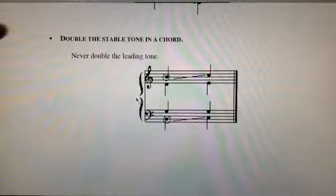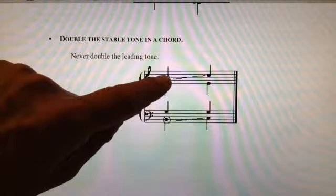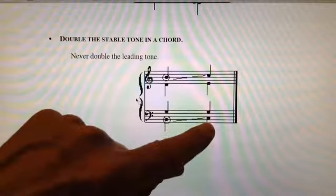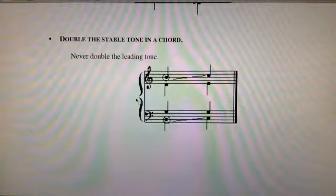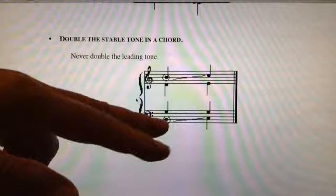Double the stable tone in the chord, never double the leading tone. You'll see the leading tone here in the melody was going from that B to the C. They harmonized this and put B to C in the bass. It's going to be weak. It would have been better to put G in the bass. We don't want that kind of parallel movement.